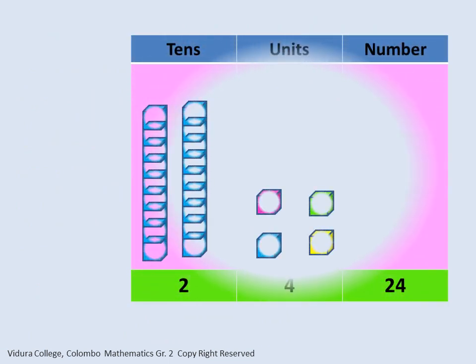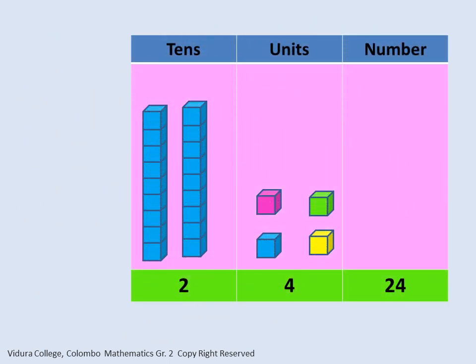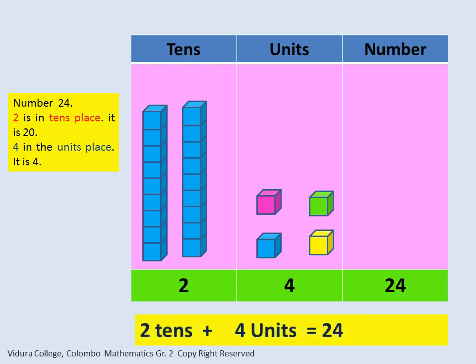Look at the chart. There are two rods in tens place, four blocks in units place. Two is in tens place. It is twenty. Four in the units place. It is four. Two tens and four units make twenty-four.